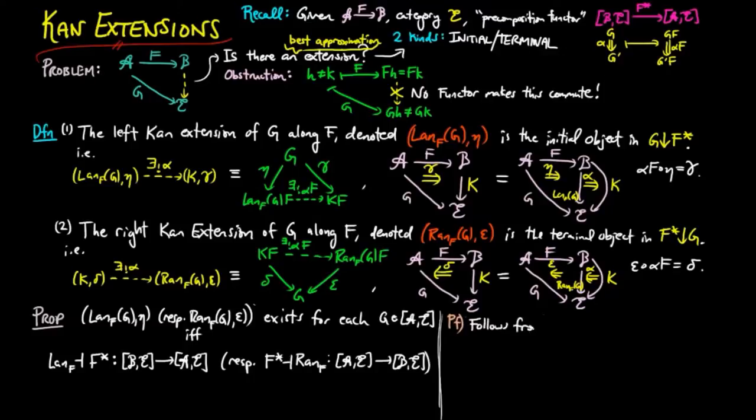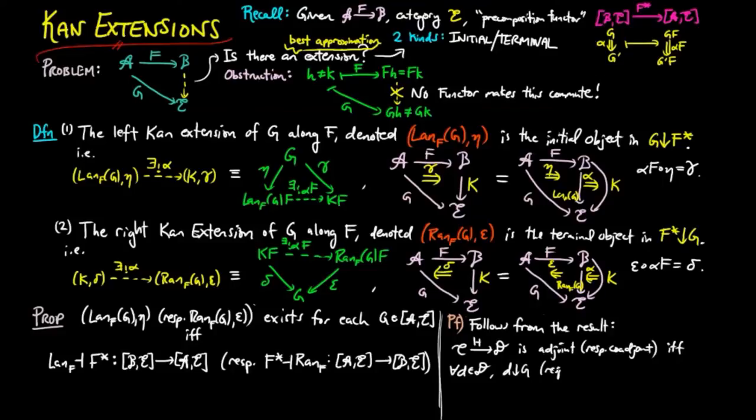This follows immediately from a result we proved in our playlist on adjoint situations, which states, H is an adjoint, respectively, coadjoint functor, if and only if, for each object D in the category D, D over G, respectively, G over D, has an initial, respectively, terminal object.